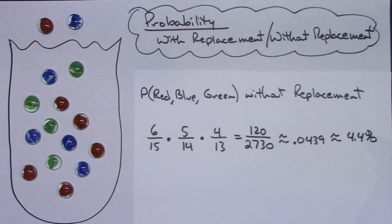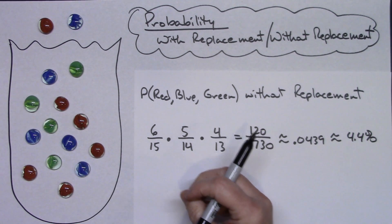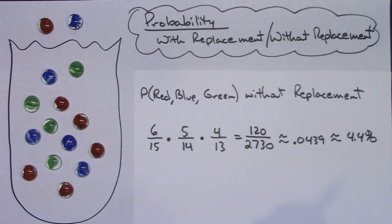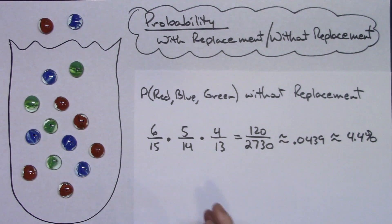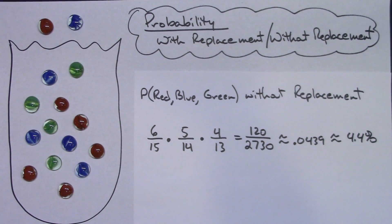So just two quick examples of calculating probabilities with replacement versus without replacement. Thanks for watching — hope this was helpful in clearing up with and without replacement. Be sure to give me a thumbs up and share with your friends!